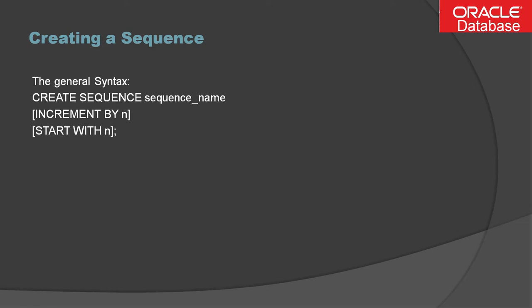START WITH specifies from which number you want to start the sequence. For example, if I specify 2500, the sequence will start at 2500, and if INCREMENT BY is one, the next value will be 2501, and so on — always increasing by one.